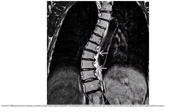T2 MRI performed to evaluate a painful scoliosis of atypical idiopathic morphology shows premature degenerative disease along the concave aspect of the curvature.